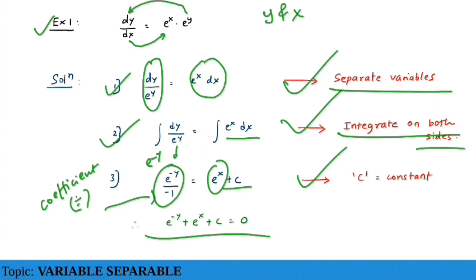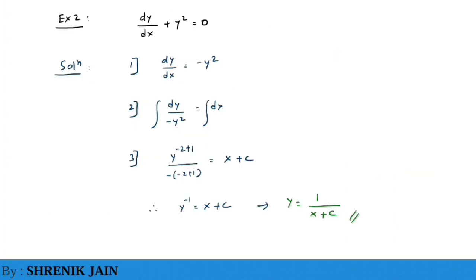Let's move on to example number 2. The equation is dy/dx + y² = 0. We have to find the solution of this differential equation, and we can use the variable-separable method as we have already studied it.